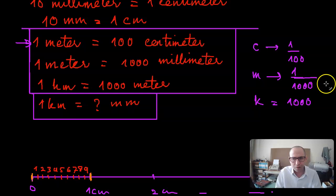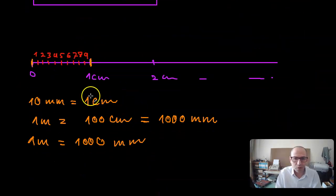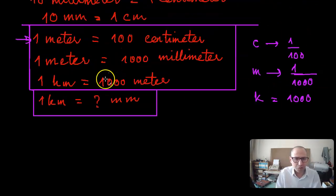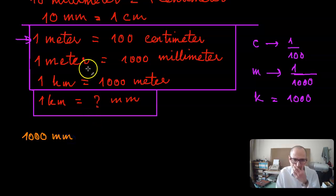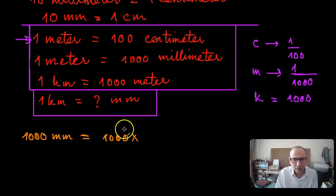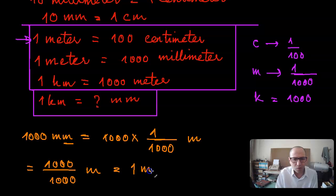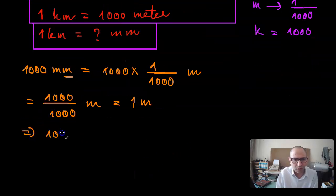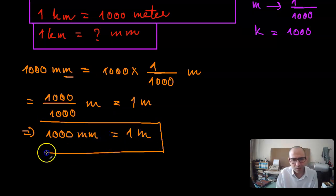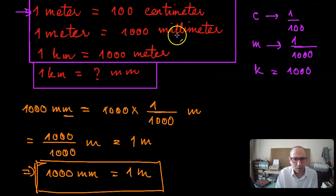Apart from the ruler and proportions, you can also calculate this using SI prefixes. For example, take one thousand millimeters: that is one thousand times milli, and milli is one over a thousand. So that's one thousand over a thousand meters, and a thousand over a thousand is one — so that's one meter. This confirms that one thousand millimeters is the same thing as one meter.